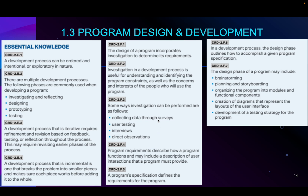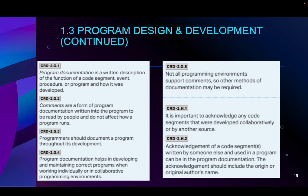Program documentation is a written description of the function of a code segment — that's essentially commenting in your code. Comments are a form of program documentation. Programmers should document a program throughout its development — comment on your variables, comment on your functions. Program documentation helps in developing and maintaining correct programs whether working individually or collaboratively. Not all programming environments support comments; other methods like a README document may be required. It is important to acknowledge any code segments developed collaboratively or by another source, which can be noted in a comment.